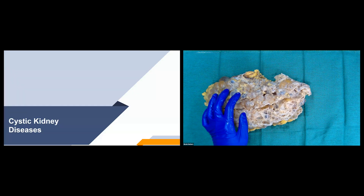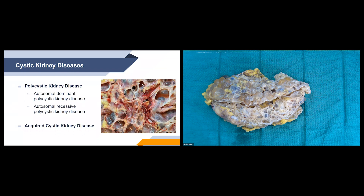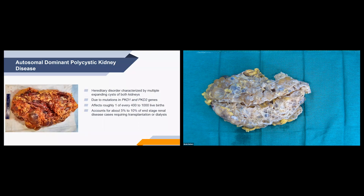Now we'll talk about cystic kidney diseases, because that's why our kidney is out today. We'll cover the three most common types: autosomal dominant polycystic kidney disease, autosomal recessive polycystic kidney disease, and acquired cystic kidney disease. Starting with ADPKD — this is a hereditary disorder characterized by multiple expanding cysts of both kidneys that ultimately destroys the renal parenchyma and causes renal failure. These kidneys can get very enlarged; the one in the photo is actually over three kilograms.